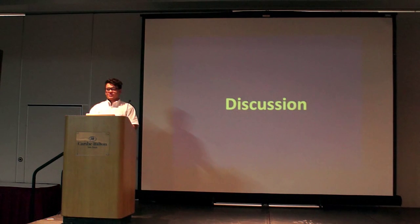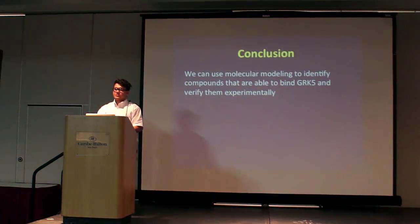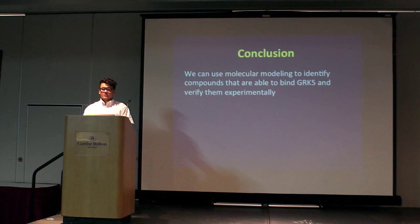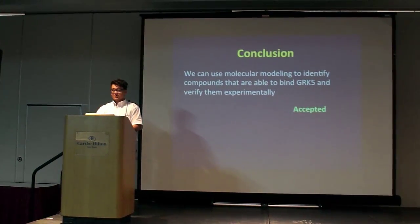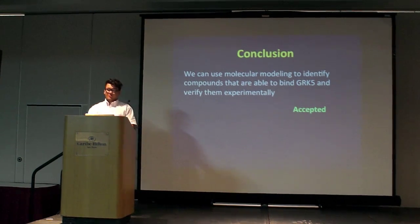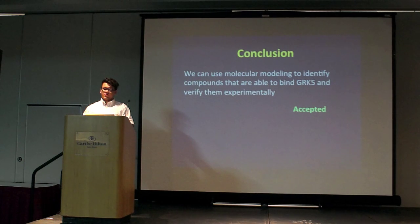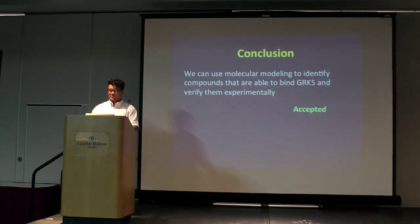Now on to my discussion. We had hypothesized that we could use molecular modeling to identify compounds that are able to bind to GRK5 and verify them experimentally. This was accepted because we were able to use molecular modeling, and by verifying these molecules experimentally, we were able to find molecules like Z22 that we could perform different experiments later to find out if it's a possible inhibitor for GRK5.